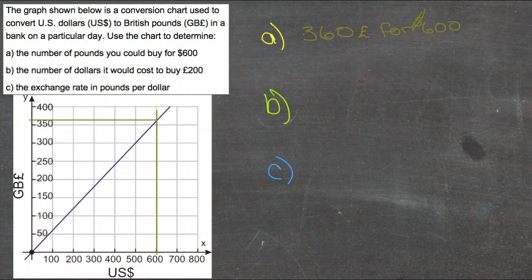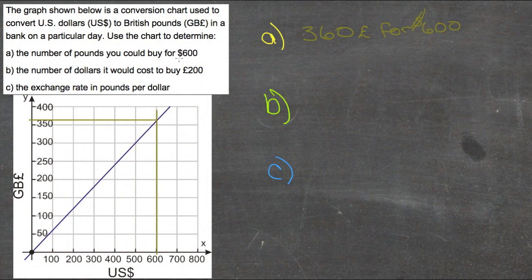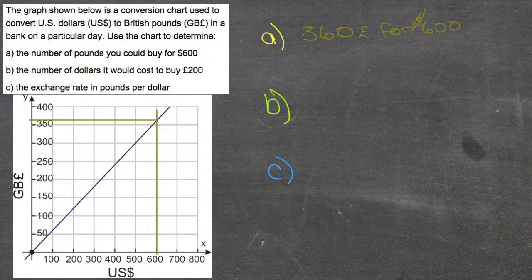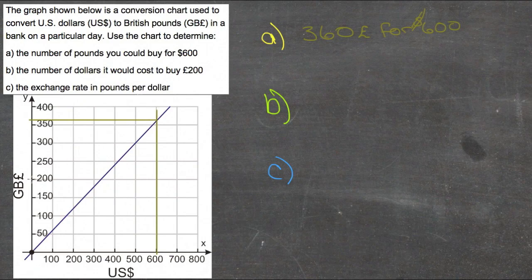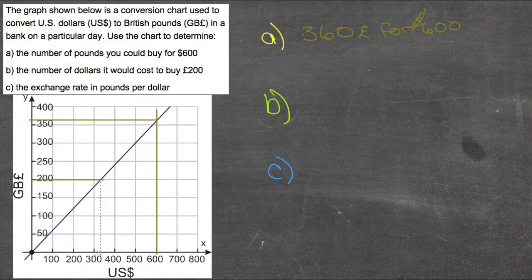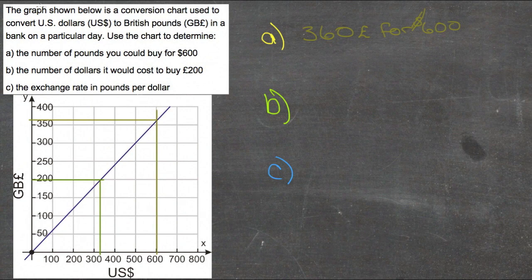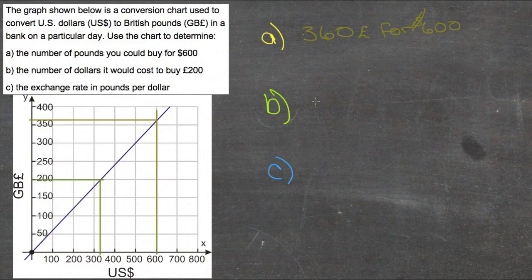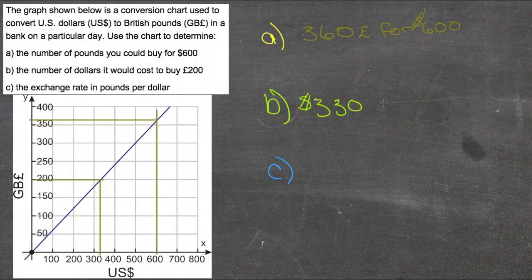Okay, and then for B, we just go the other way. For B, we know that we're looking for the number of dollars we can buy with 200 pounds. So here we go up to 200 pounds, and we go across to see where it intersects with the US dollars. That looks like it goes about here, so about $325, $330, so we're going to say that you can buy $330 for 200 pounds.